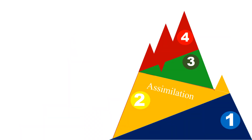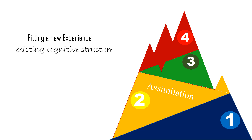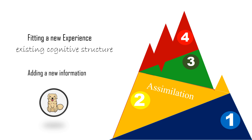Assimilation is the process of fitting a new experience into an existing or previously created cognitive structure or schema. If the child sees another dog, this time a little smaller one, he would make sense of what he is seeing by adding this new information — a different looking dog — into a schema of a dog.